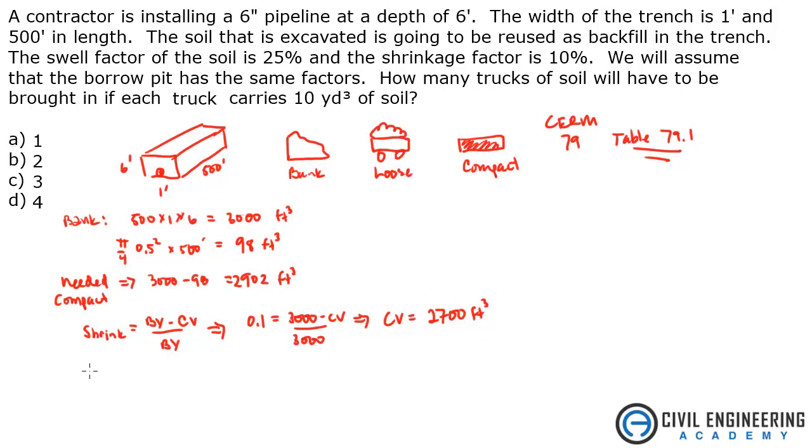So what's the difference there? 2,902 minus 2,700 is 202 cubic feet. That's the difference.